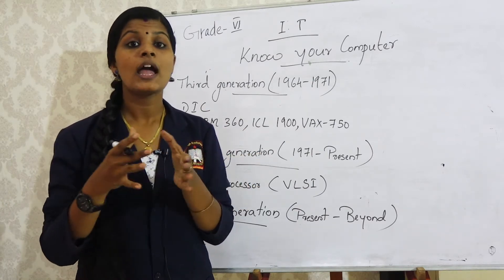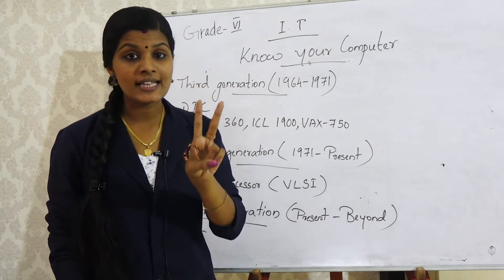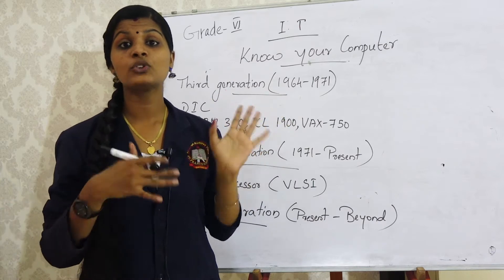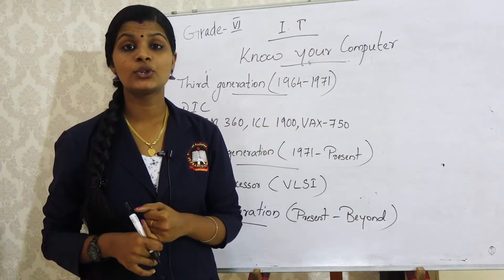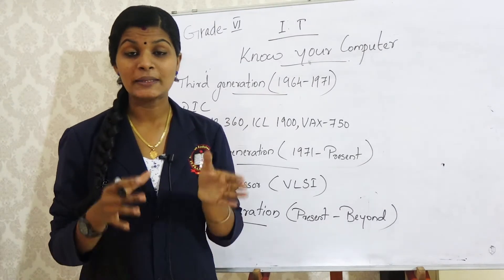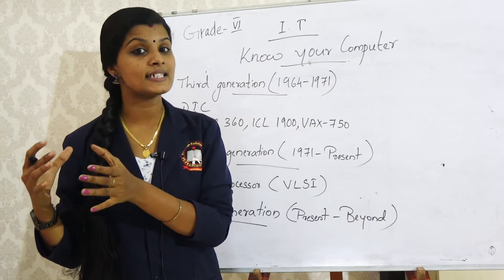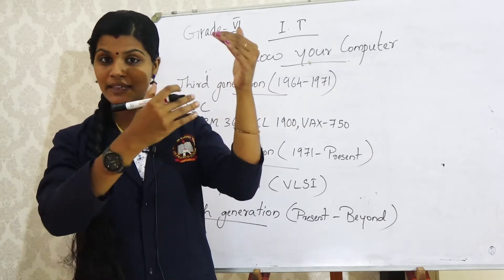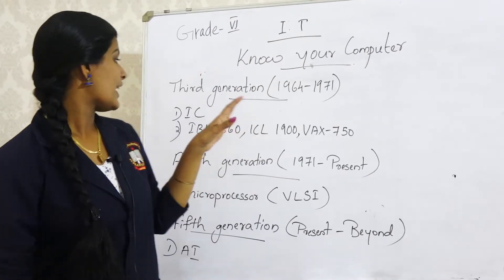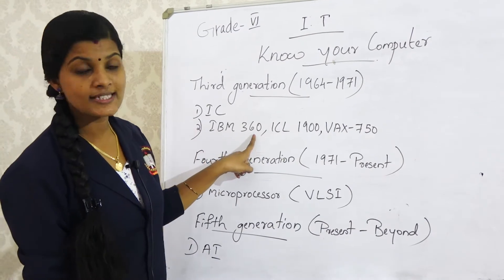In the first generation we used vacuum tubes, in the second generation we used transistors, and now in the third generation we use integrated circuits or ICs. When you look in the textbook, the picture is clear. The size of the integrated circuit is smaller compared to first and second generation. The examples of third generation are IBM 360, ICL-1900, and VAX-750.